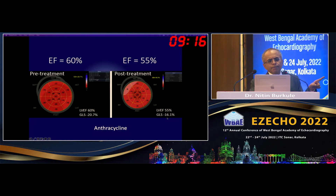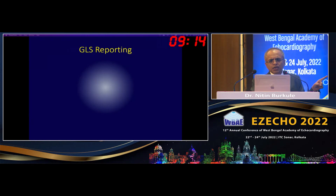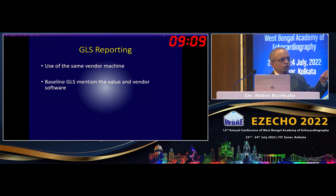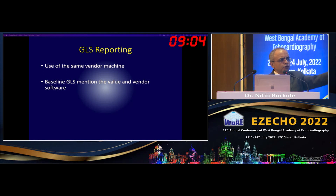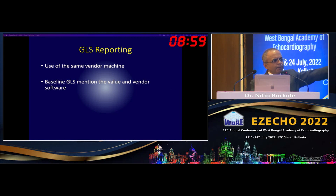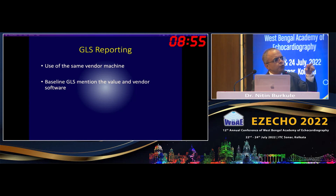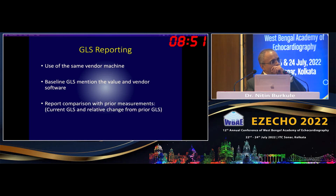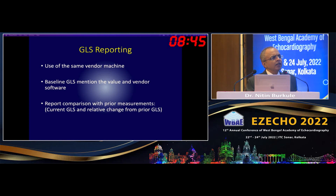When reporting GLS, always use the same vendor machine. Mention on the echo report the specific system, make, and software used — whether done on the system or on TomTec, EchoPAC, or QLab. On the next visit, use the same vendor, same machine, same software. Report the percentage change from baseline, since the oncologist won't know what a normal GLS is.